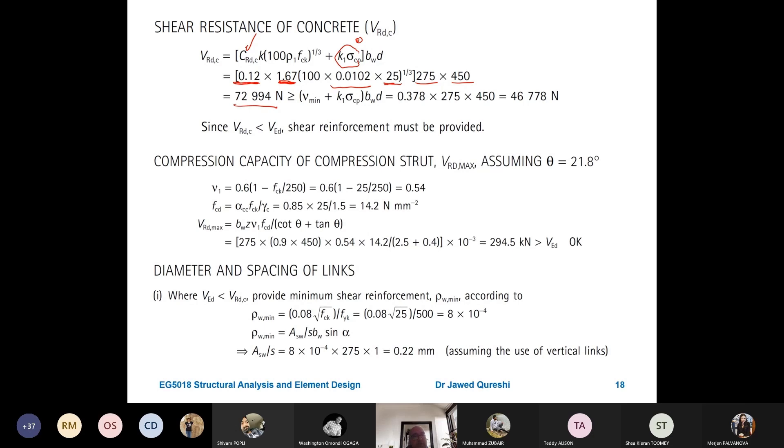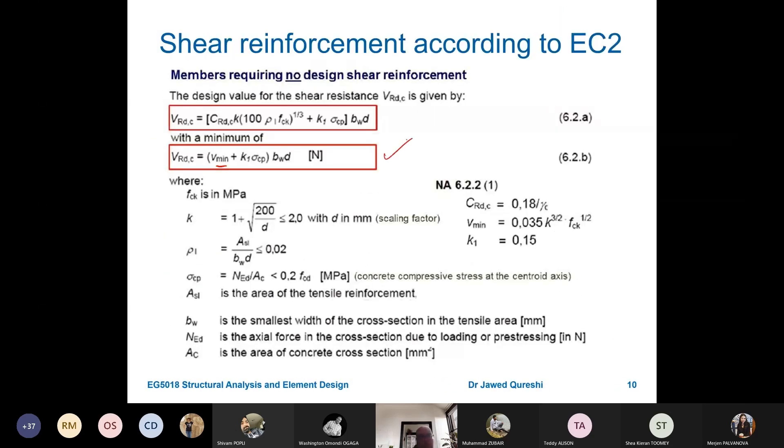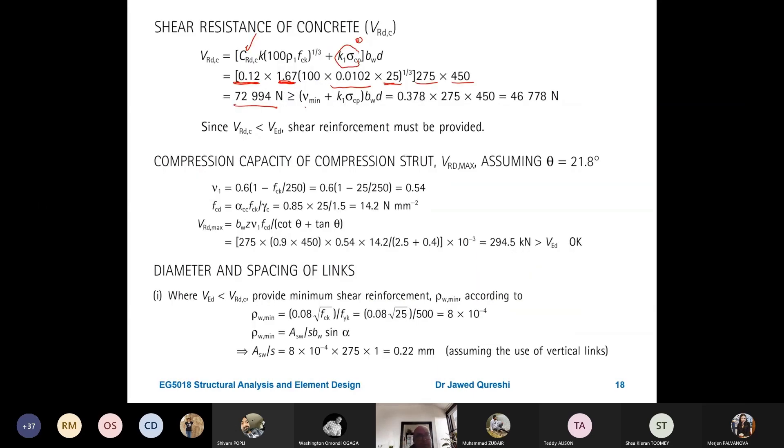Once you have got this, it comes out to be 72 kilonewtons. This has to be greater than minimum V RDC. Where minimum V RDC, if you go back, we should compare it with minimum as well. So, minimum comes from this formula. Small V min, I already determined 0.3778. Sigma CP is 0 because there is no axial load. BW is width and D is the depth. So, when I put these values, it comes out to be 46 kilonewton. Our value of V RDC is certainly greater than the minimum value. So, it means that this V RDC is fine.